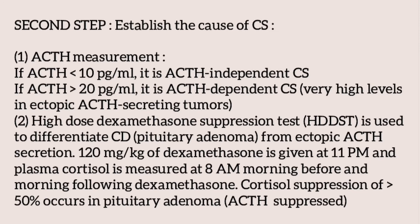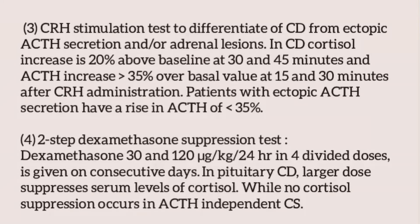The high-dose dexamethasone suppression test is used to differentiate Cushing disease (pituitary adenoma) from ectopic ACTH secretion: 120 mcg/kg of dexamethasone is given at 11 PM and plasma cortisol is measured at 8 AM before and after. Cortisol suppression of more than 50% occurs in pituitary adenoma. The CRH stimulation test is used to differentiate Cushing disease from ectopic ACTH secretion or adrenal lesions: in Cushing disease, cortisol increases more than 20% above baseline at 30 and 45 minutes, and ACTH increases more than 35% over basal value at 15 and 30 minutes. Patients with ectopic ACTH secretion show an ACTH rise of less than 35%.